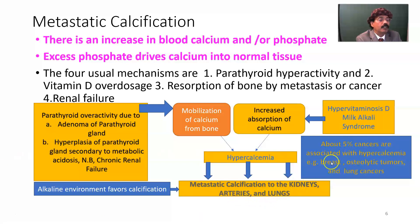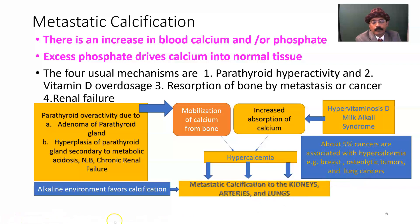About 5% of cancers are associated with hypercalcemia, notably breast cancer, osteolytic tumors, and lung cancers. Cancer cells release a protein substance that resembles parathyroid hormone, which stimulates hypercalcemia.